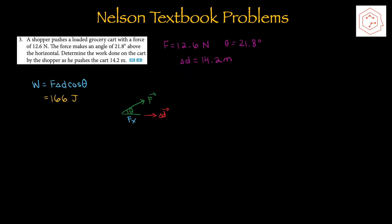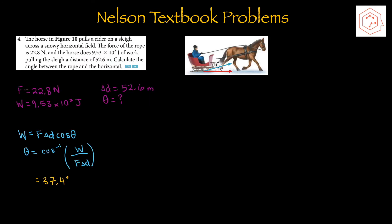Question 3: A shopper pushes a loaded grocery cart with a force of 12.6 newtons at an angle of 21.8 degrees above the horizontal. Determine the work done on the cart as he pushes it 14.2 meters. We know force, theta, and the magnitude of displacement, so plugging into the formula for work gives 166 joules.